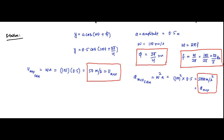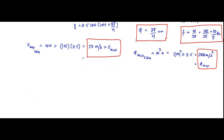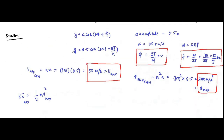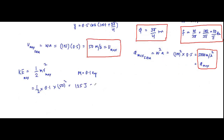Next, we find the maximum kinetic energy. Kinetic energy for a mass m is given by ½mv². Kinetic energy is maximum when velocity is maximum. The maximum velocity is 50 m/s and the mass is 0.1 kg. Substituting: KE_max = ½ × 0.1 × 50² = ½ × 0.1 × 2500 = 125 joules. That is the maximum kinetic energy.